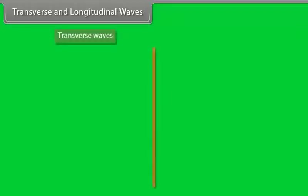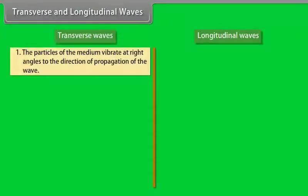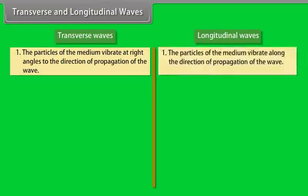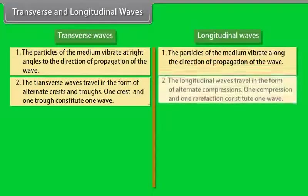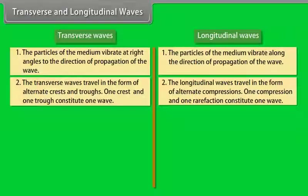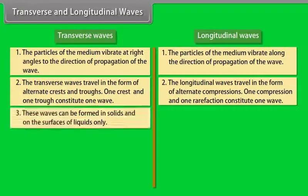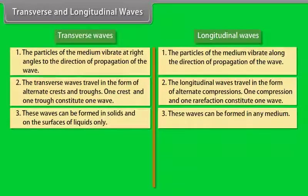Let's differentiate between transverse waves and longitudinal waves. Number 1: In transverse waves, the particles of the medium vibrate at right angles to the direction of propagation of the wave, whereas in longitudinal waves, the particles vibrate along the direction of propagation. Number 2: Transverse waves travel in the form of alternate crests and troughs — one crest and one trough constitute one wave — whereas longitudinal waves travel in the form of alternate compressions and rarefactions — one compression and one rarefaction constitute one wave. Number 3: Transverse waves can be formed in solids and on the surface of liquids only, whereas longitudinal waves can be formed in any medium.